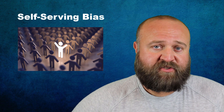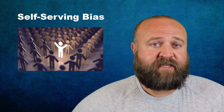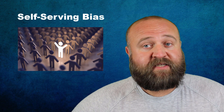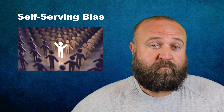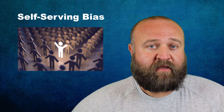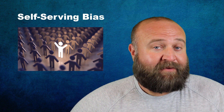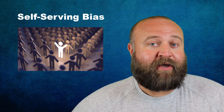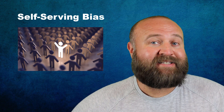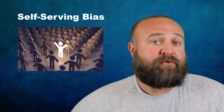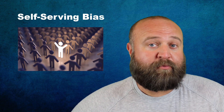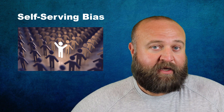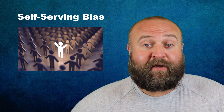The self-serving bias simply describes that we tend to do things — including thinking and judging — based on what is in our own personal self-interest. If I make a mistake, like cutting someone off in traffic, it makes me feel better to know this isn't because I'm a bad person — it was just a mistake brought about from the situation. This way, it isn't a blow to my ego.